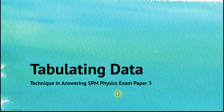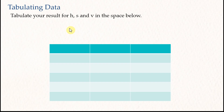In previous videos we learned how to take readings from images. After taking the readings, we need to record them in a table. Here I'm going to discuss how to tabulate your data. The question asks you to tabulate results of H, S, and V, where H is the height of the inclined plane, S is the length of the ticker tape, and V is the speed, which we will calculate later.